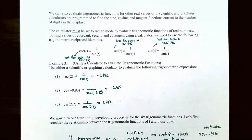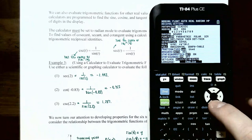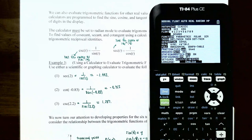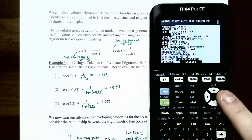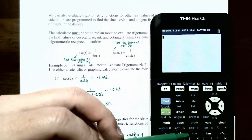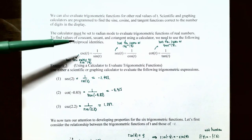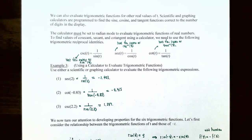We can also evaluate trigonometric functions for other real values using a calculator. Make sure the calculator is set to radian mode to evaluate trigonometric functions of real numbers. Press mode on the graphing calculator and select radian. Note that sine, cosine, and tangent are programmed into any scientific or graphing calculator. However, to find cosecant, secant, and cotangent, we need to use the reciprocal identities.